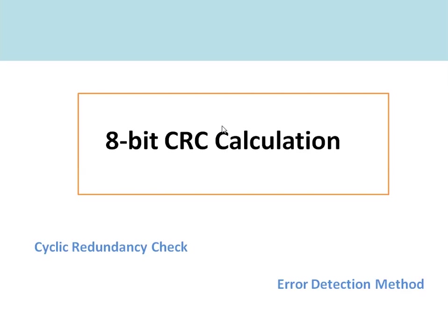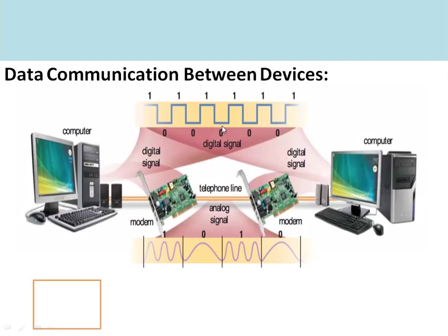Depending upon the application requirement, the type of CRC is selected in the design. Here I am going to discuss about 8-bit CRC — how it is generated and how it is calculated between the sender and the receiver. The same can be extended to 16-bit and 32-bit CRC.